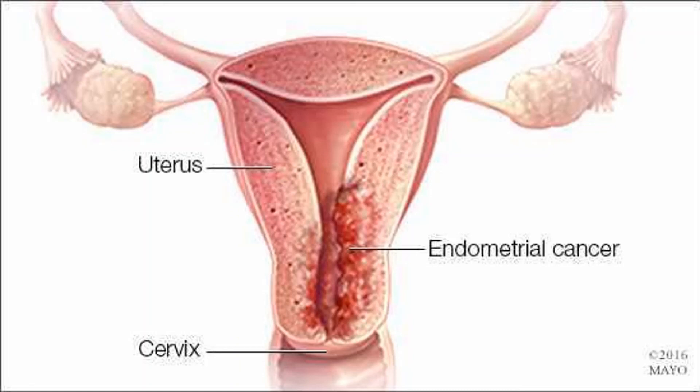Other types of cancer in the uterus. Uterine sarcomas start in the muscle layer, the myometrium, or supporting connective tissue of the uterus. These include uterine leiomyosarcomas and endometrial stromal sarcomas. These cancers are not covered here but are discussed in detail in the uterine sarcoma section. Cancers that start in the cervix and then spread to the uterus are different from cancers that start in the body of the uterus.